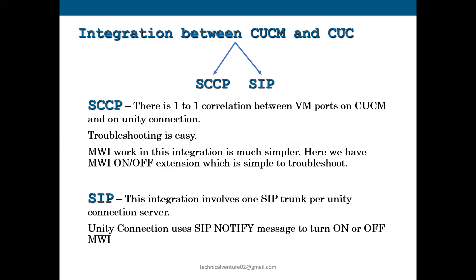In SIP, Unity Connection uses SIP NOTIFY messages to turn MWIs on and off. In SCCP, we need to create MWI on and off extension numbers. In SIP, it will just send a NOTIFY message to turn the indicator on or turn the indicator off.